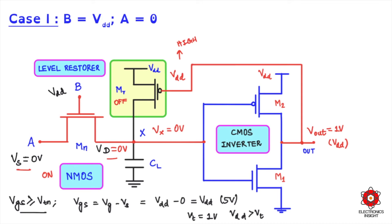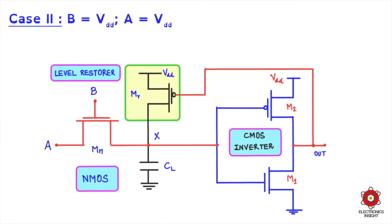Let us move on to the next case, which shows how the level restorer circuit overcomes the voltage drop problem in the NMOS pass transistor. Now let A make a transition from zero volts to VDD — but note that the voltage does not jump directly; it gradually increases from zero volts to VDD. We should imagine a slow transition: zero volt, one volt, two volts, gradually increasing to VDD. Also note that there is a separate video on retaining previous voltage values with case studies, linked in the description below.